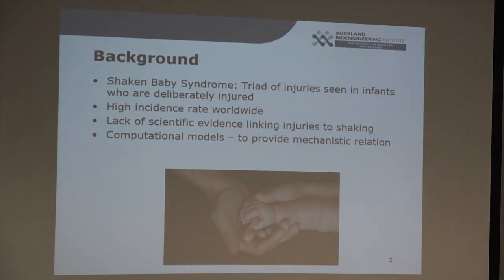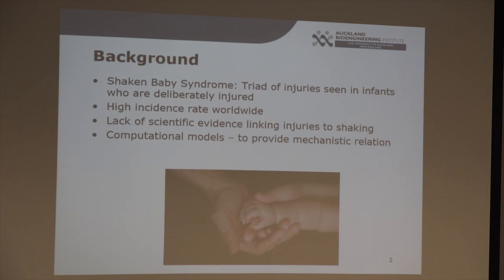Abusive head trauma, or more commonly termed shaken baby syndrome, refers to a triad of injuries seen in mistreated infants. These injuries include subdural hematomas — bleeding between the brain and the skull — retinal hematomas, which is bleeding behind the eye, and brain swelling. There's a very high incidence rate of abusive head trauma worldwide, at about 14 in every 100,000 infants per year. However, there's still a lack of scientific evidence linking the injuries seen to a deliberate shaking action, and it's this lack of scientific evidence that comes up in many court cases.